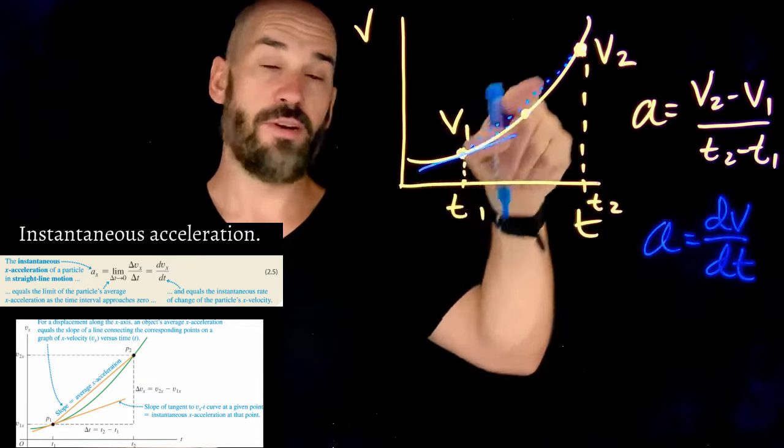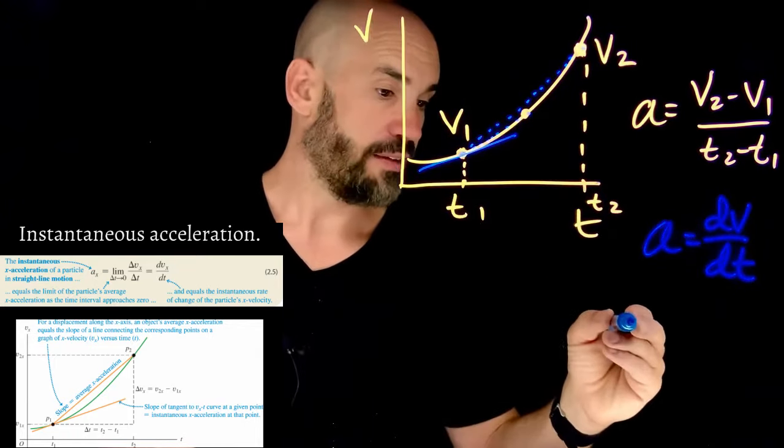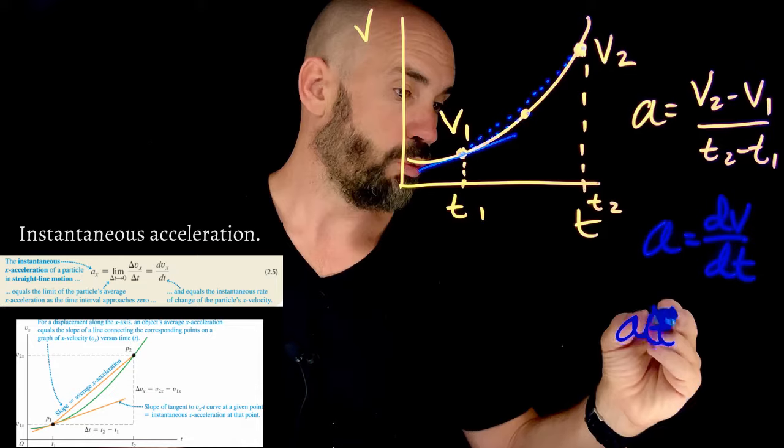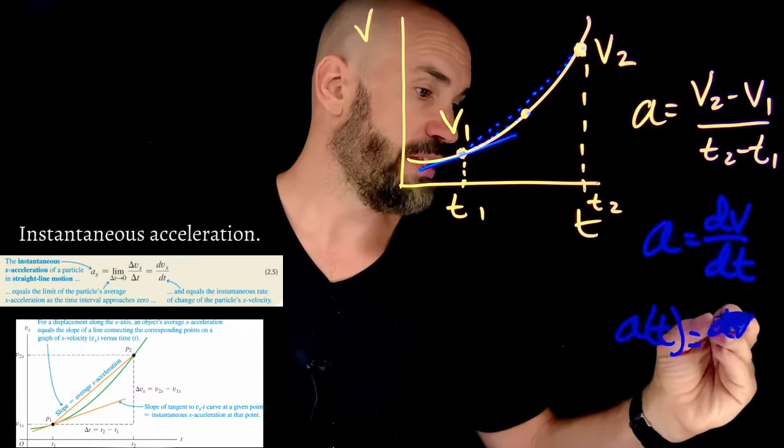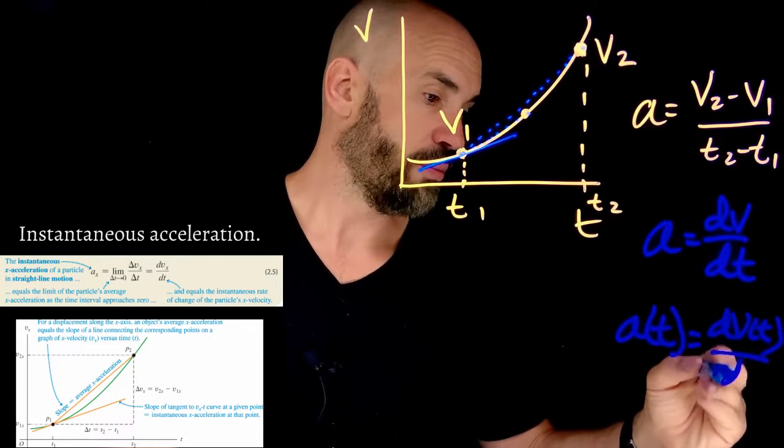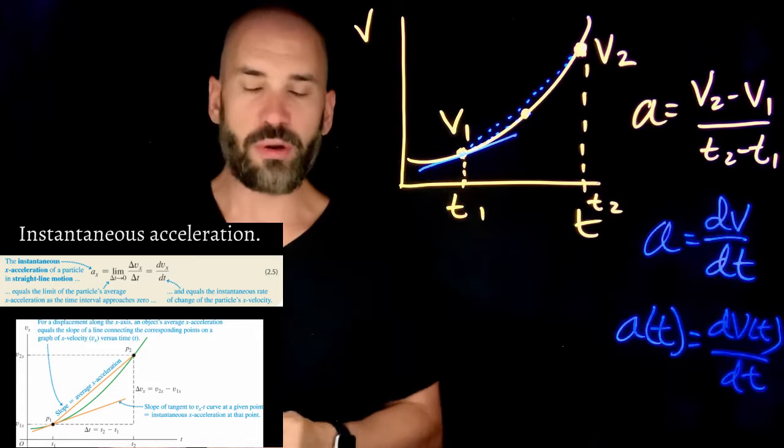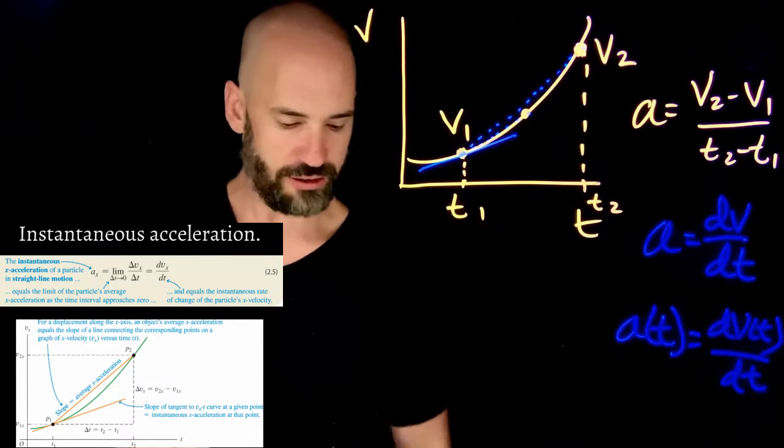Then we're talking about the instantaneous acceleration. And we need to know the actual derivative, dv/dt, of this line in order to calculate the instantaneous acceleration at any given point. So if we find the derivative of this function, and so A of T will be the derivative of the V of T equation at any given point. And so let's do a quick example just to make this a little bit more clear.